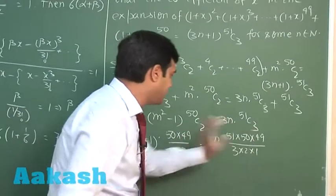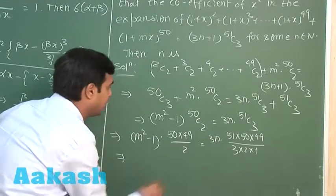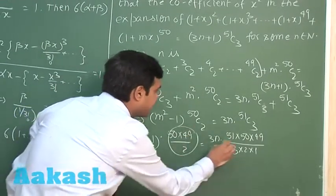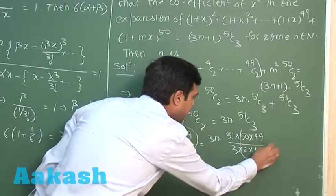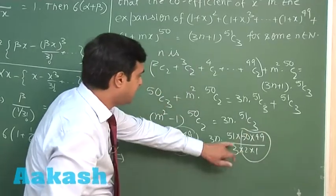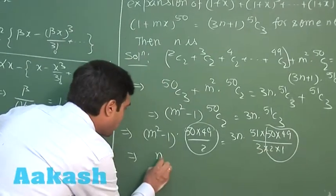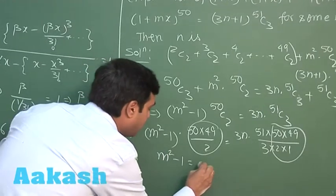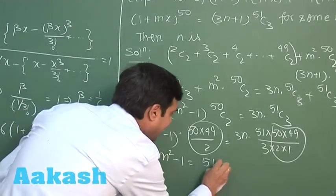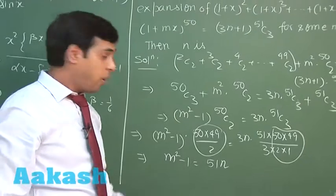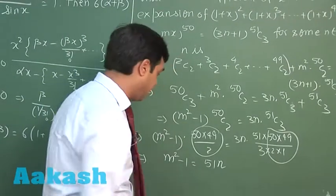We can see this term is cancelled. We are left with after cancelling this term with this one, this gives me 3 also cancelled. m square minus 1 is equal to 51n or m square is equal to 51n plus 1.